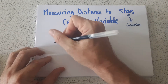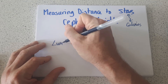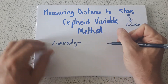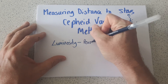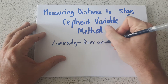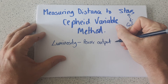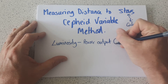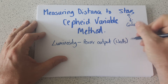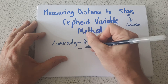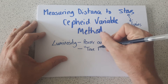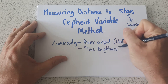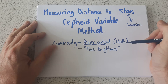Before we start we just need to have knowledge of the definition of luminosity of a star. Luminosity is the power output of a star or galaxy — the amount of energy it gives out per second — so it's measured in watts. You can think of luminosity as the true brightness of a star, but technically it's the power output in watts.